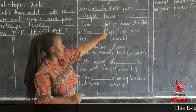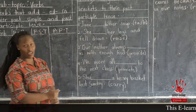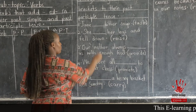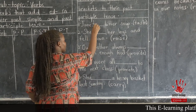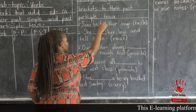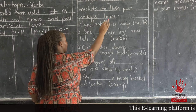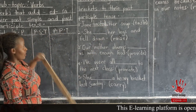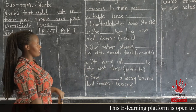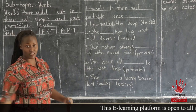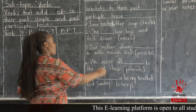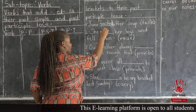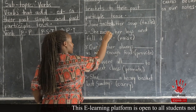Number one: Jane ___ bitter soup — in brackets we had 'test.' Therefore the answer was supposed to be 'tested' by adding only D. Number two: She ___ her legs and fell down — we had the word 'raise' in brackets, so the answer was supposed to be 'raised,' still by adding D.